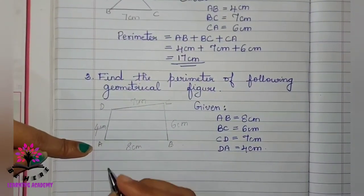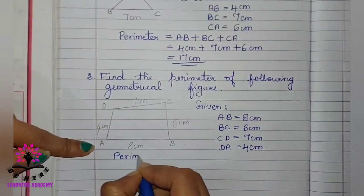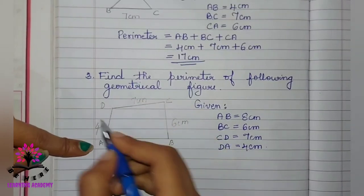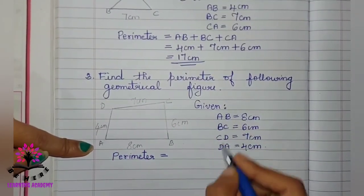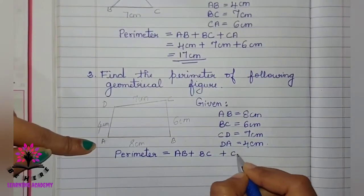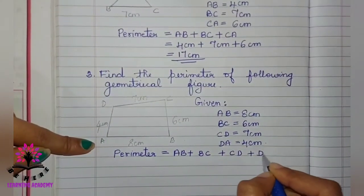Then, similarly, you have to write the formula. Perimeter is equal to, here there are 4 sides. You have to write these sides. AB plus BC plus CD plus DA.